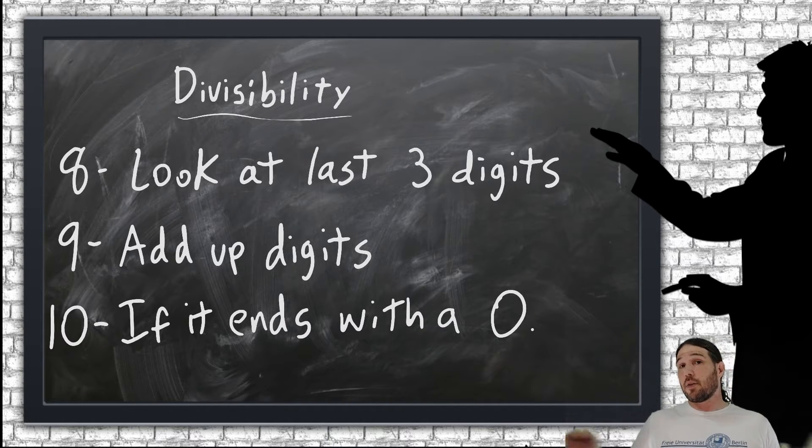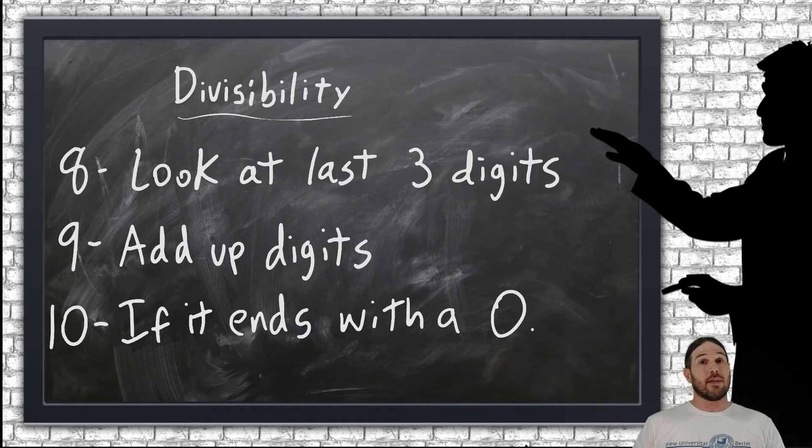If it ends with a 0, then it is divisible by 10 evenly. If it ends with anything other than a 0, then it's not divisible by 10. That one's pretty straightforward.